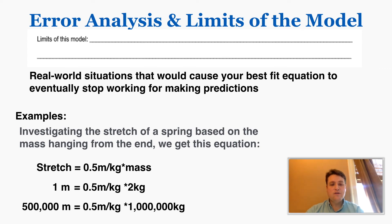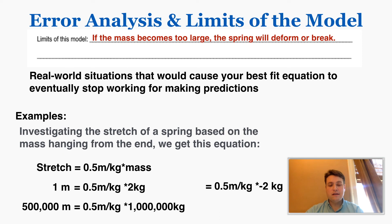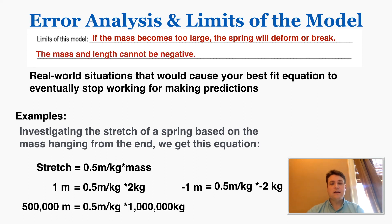So even though my best fit equation tells me the spring would stretch that far, I know there's a limit. One limit is that if the mass becomes too large, the spring will deform or break. Another limit is that the equation works for negative numbers — if I plug in negative 2 kg, it says the spring stretches negative 1 meter — but there's no such thing as negative mass in physics, so the mass and length cannot be negative. These are things you can plug into the equation fine, but don't work in the real world. That's what the limit of the model is talking about. That's what you need to know about error analysis and limits of the model.